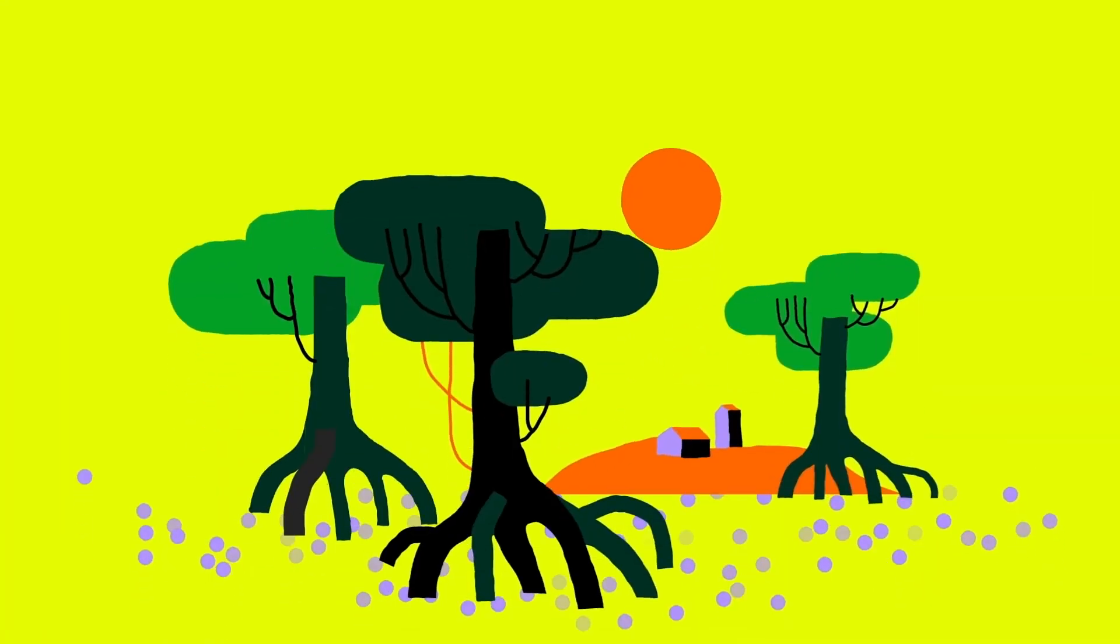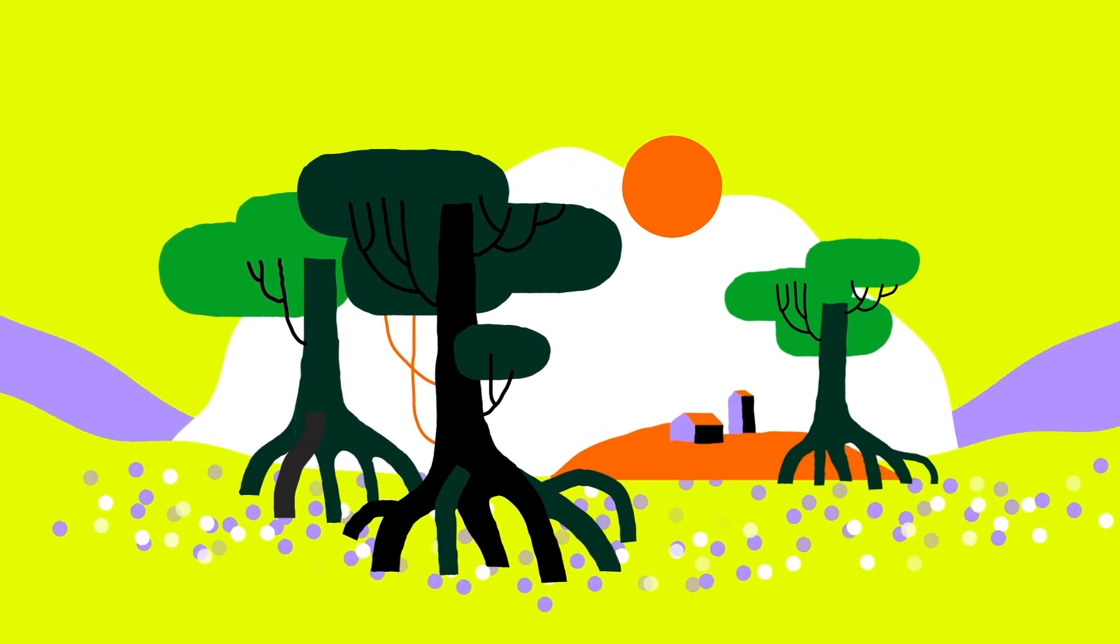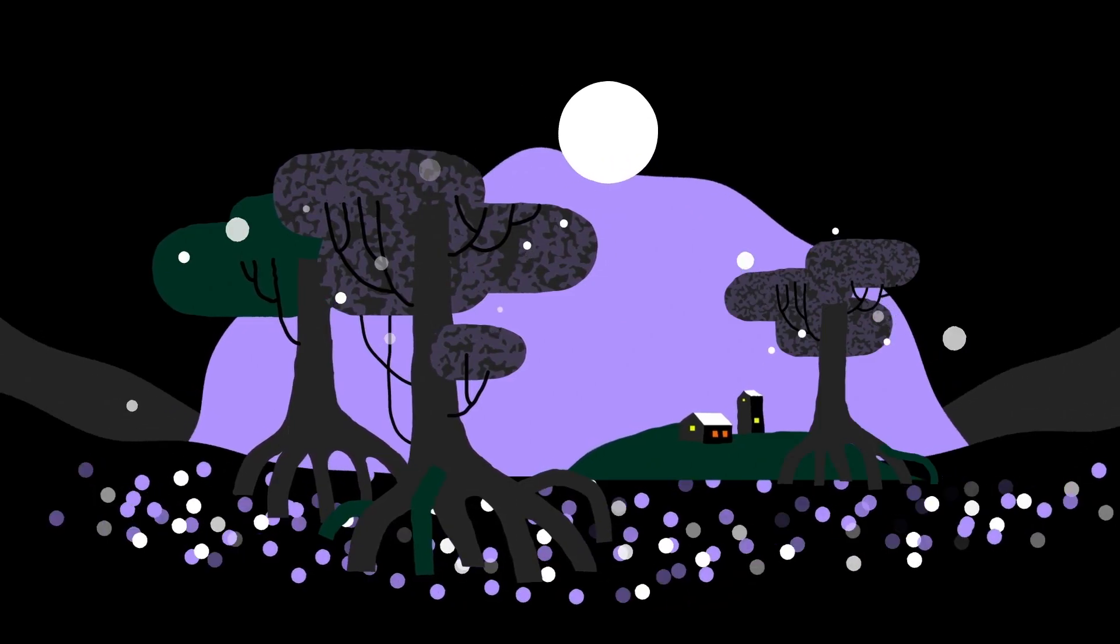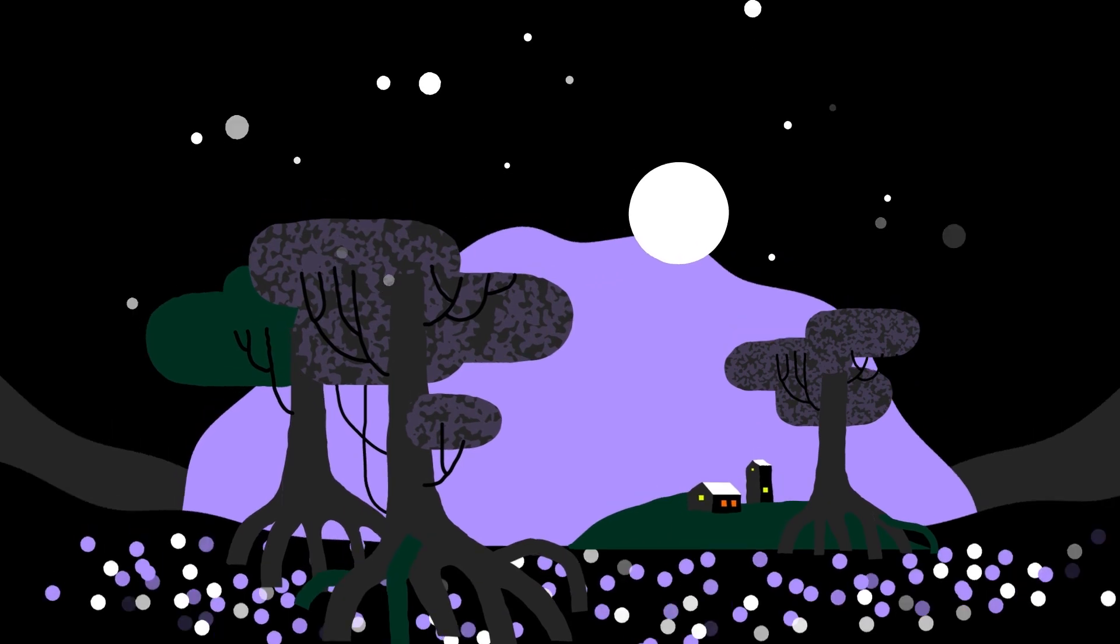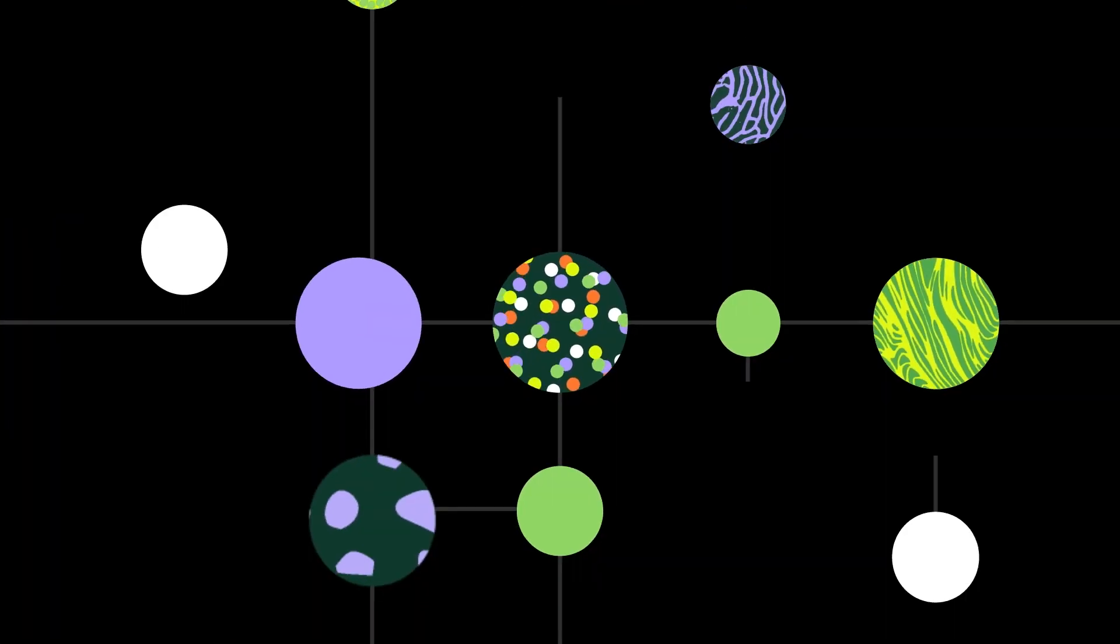Plus, mangroves and reefs also protect us from big storms like hurricanes and tsunamis. And that's just one habitat. Each one of those supports the greater global ecosystem.